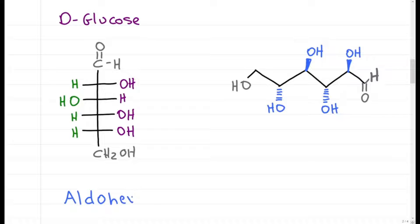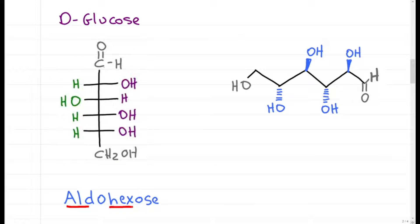Glucose is an aldohexose, that's AL for the aldehyde, hex for 6 carbons, and O's letting me know that it's a sugar. And since aldehyde is the highest priority, we number from the top.